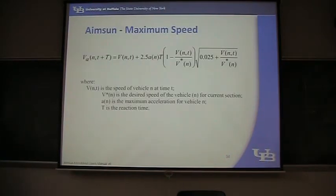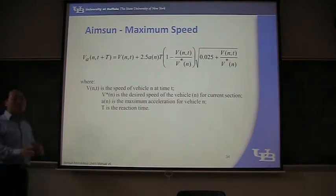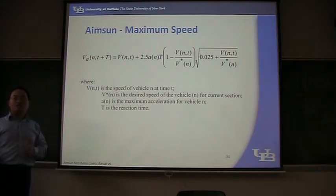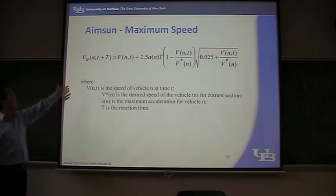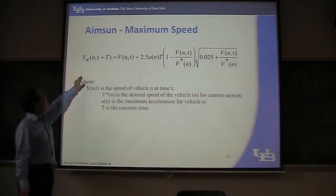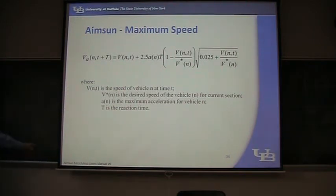Now the last topic is MSOM. MSOM is using the Gibbs model, which is the collision avoidance model. The first equation is very difficult to understand, so let's see what it has. On the left is the speed of vehicle at time T plus capital T.